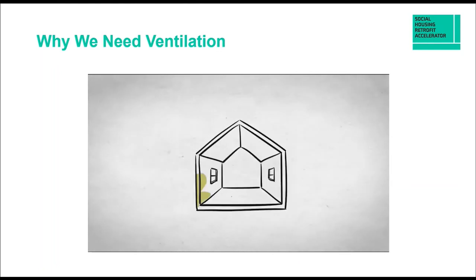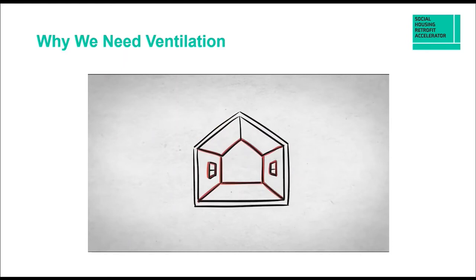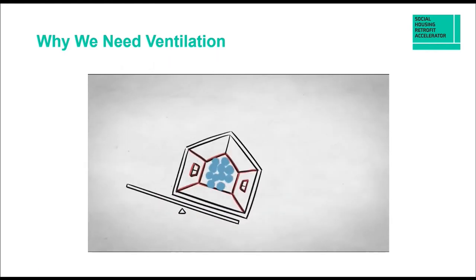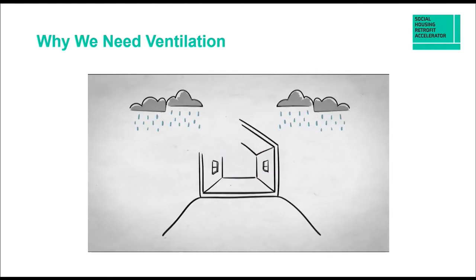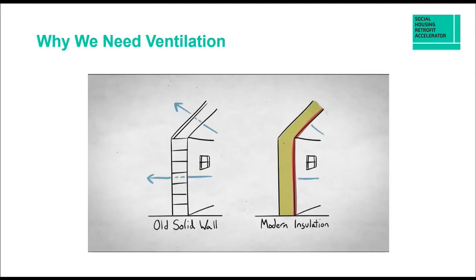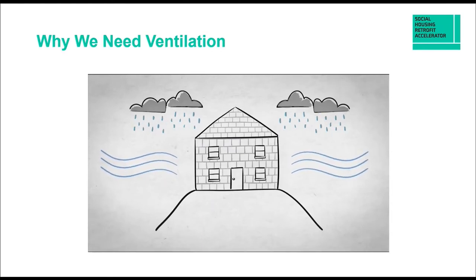Home improvements need attention to detail and can sometimes put things out of balance. For example, improving windows or insulation is great for heat retention, but if the installation leaves gaps, it can create colder areas called cold bridges where moisture can condense and mould can grow. If you draught-proof your home but ventilation is not also considered, then moisture levels can rise and push the house out of balance, so a good ventilation strategy is needed. Different types of buildings in different locations need different approaches to maintain balance.